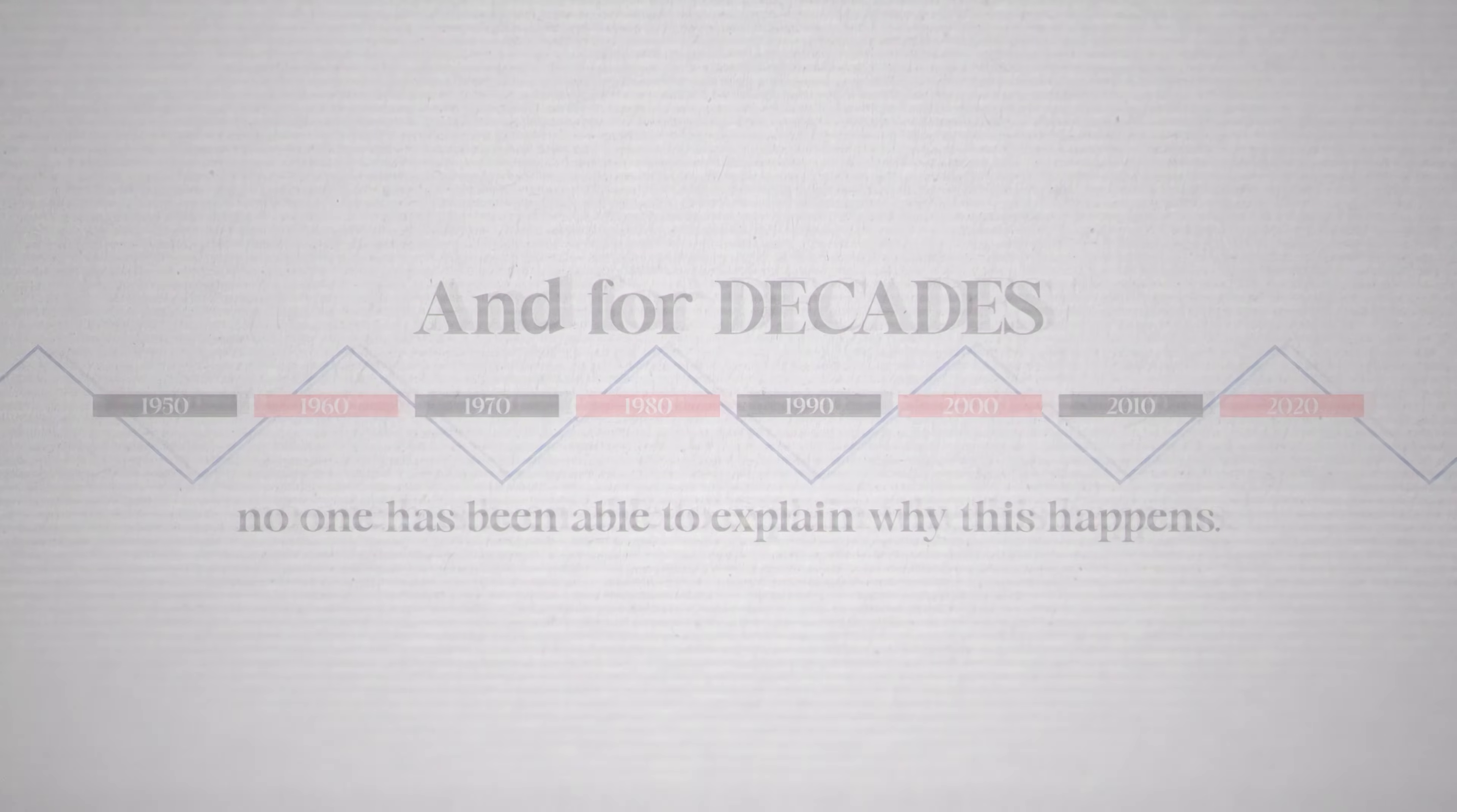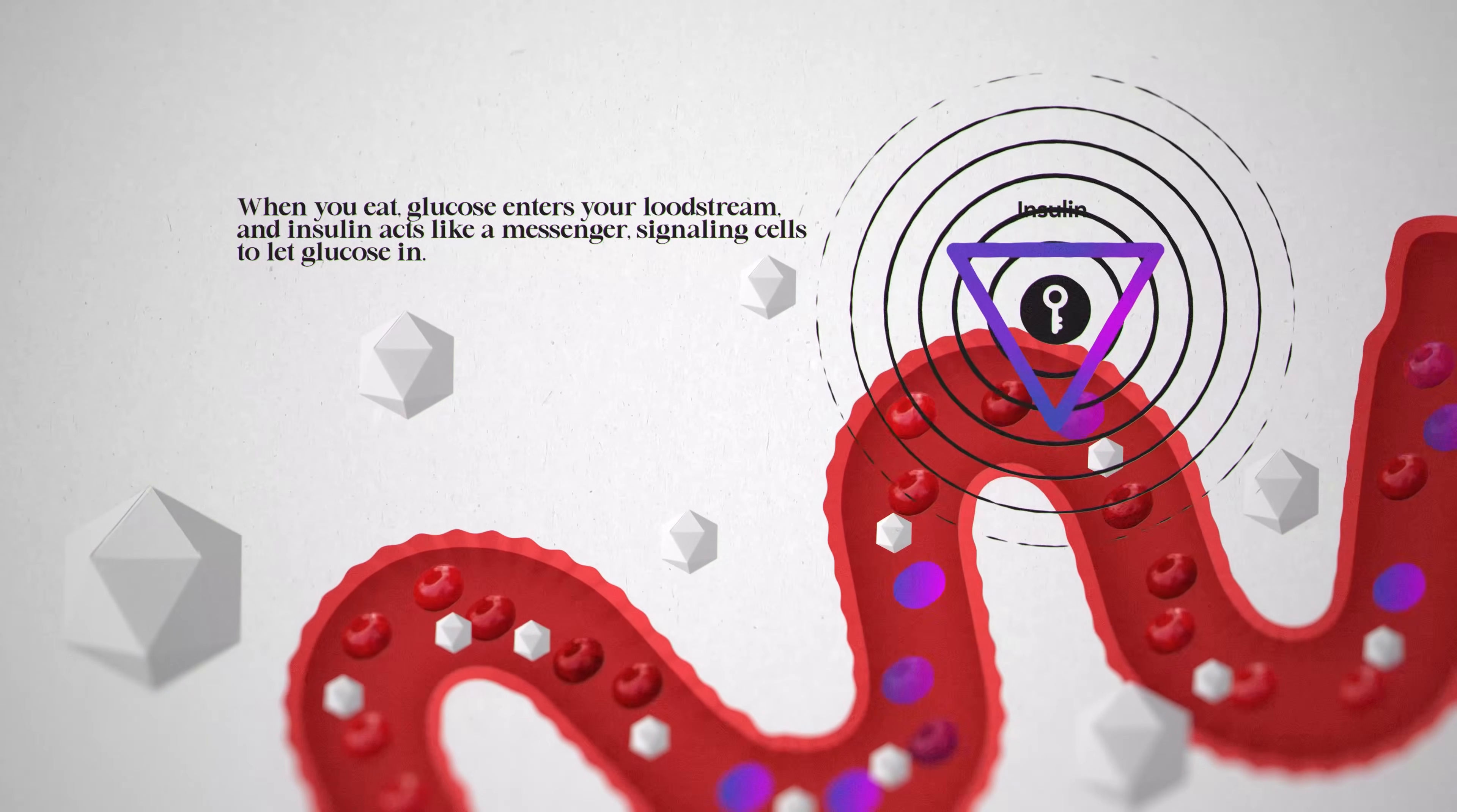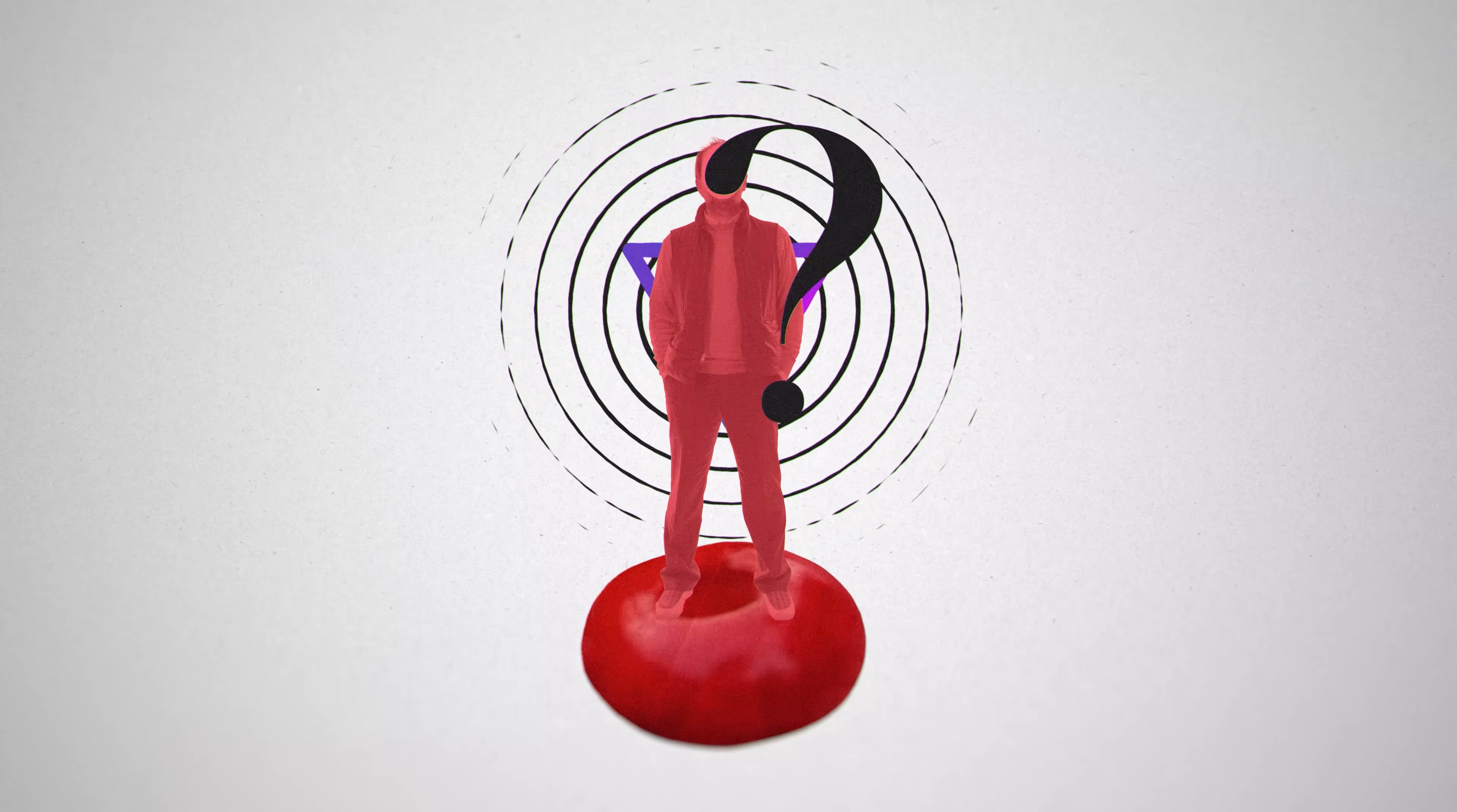Here's what we do know. Your cells rely on glucose to produce energy, a molecule called ATP—your body's fuel. When you eat, glucose enters your bloodstream and insulin acts like a messenger, signaling cells to let glucose in. In people with type 2 diabetes, glucose levels in the blood become elevated. But is it really because the cell doesn't hear the insulin?